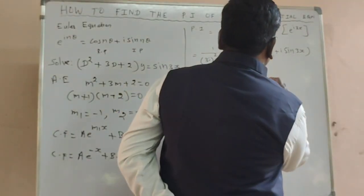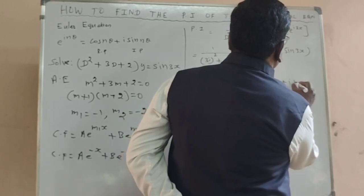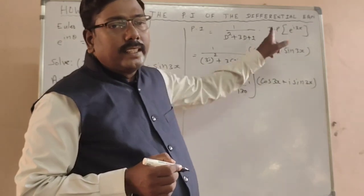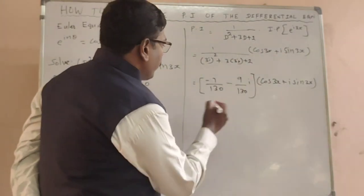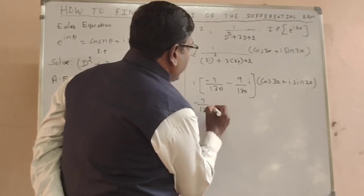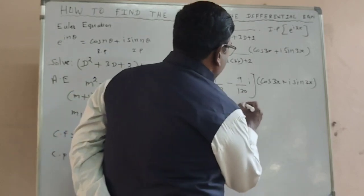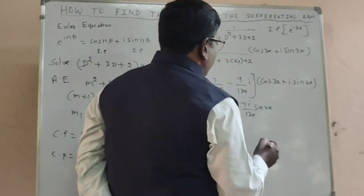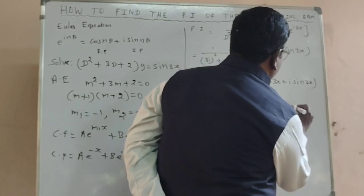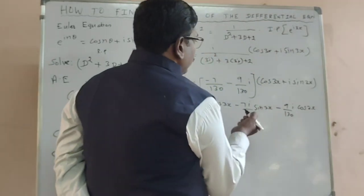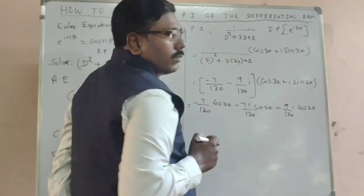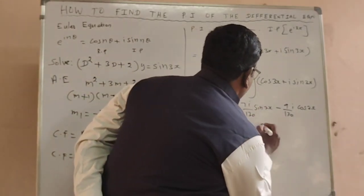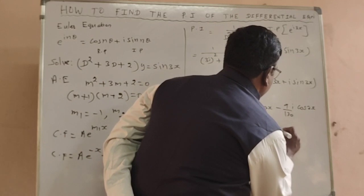So we have (−7/130 − 9i/130) multiplied by (cos(3x) + i·sin(3x)). Now multiply these two terms. We get: −7/130·cos(3x), then −7i/130·sin(3x), then −9i/130·cos(3x), then −9/130·i·i = −9/130·i² = −9/130·(−1), so this term comes out as plus 9/130·sin(3x).